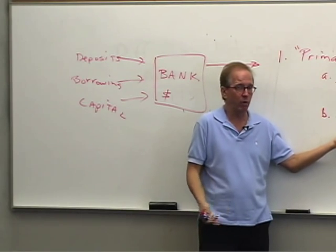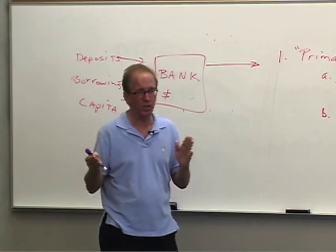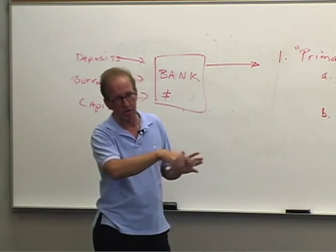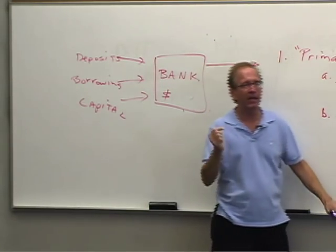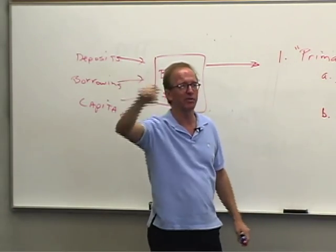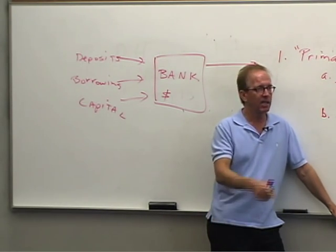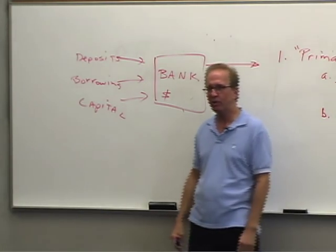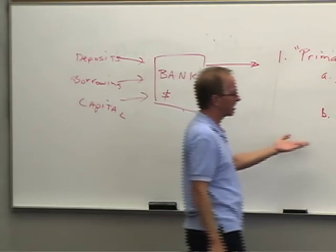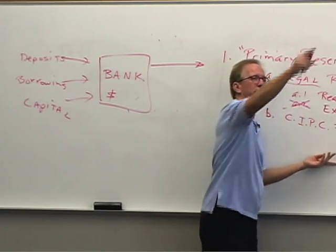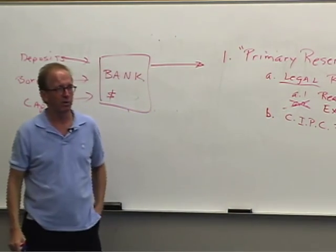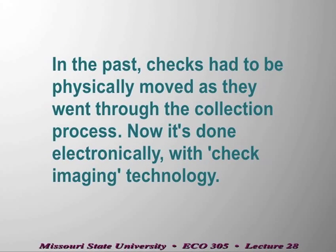Back in the old days — 30 or 40 years ago — these checks had to be physically flown across the country to the Federal Reserve Bank. Bad weather could delay the process. Now we've moved to imaging, which speeds everything up, but banks still have check items in the process of collection for a short period of time. It's a liquid asset that earns no interest.